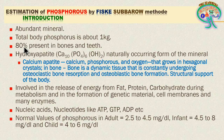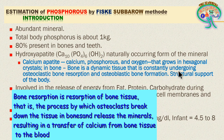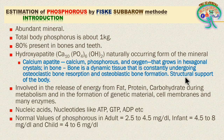Phosphorus is the abundant mineral which forms many biological molecules. About 80% is present in bones and teeth as hydroxyapatite — a naturally occurring form of the mineral containing calcium, phosphorus, hydrogen, and oxygen. This complex forms calcium appetite where calcium, phosphorus, and oxygen form hexagonal crystals in bone. Bone is a dynamic tissue constantly undergoing osteoclastic bone resorption and osteoblastic bone formation, serving as structural support of the body.